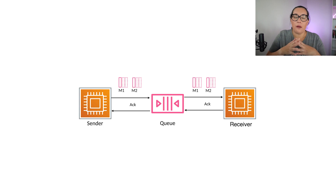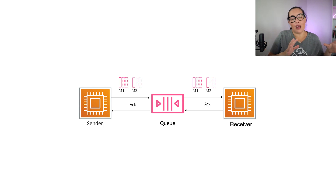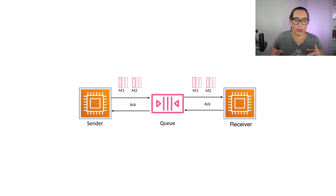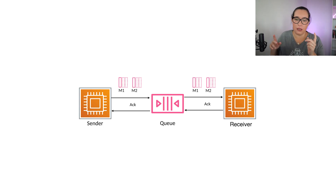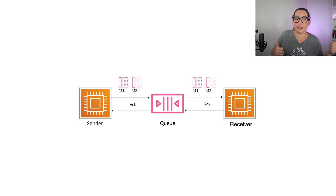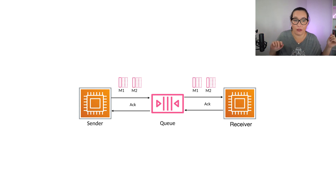Queues are messaging channels that allow asynchronous communication between the sender and the receiver. The sender sends messages and the receiver receives them through the queue, and it just acknowledges — yeah, whatever.